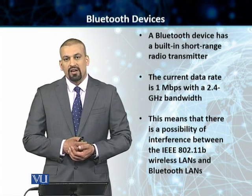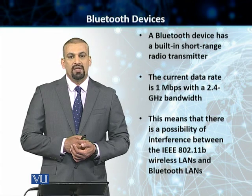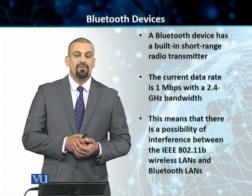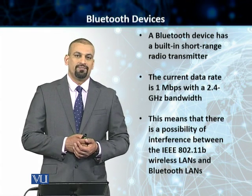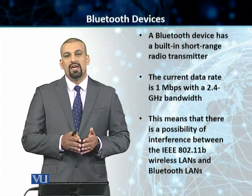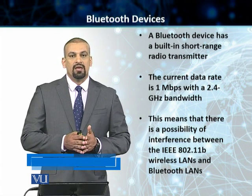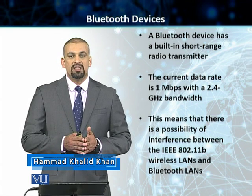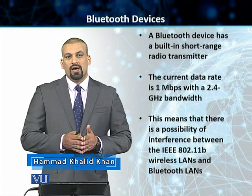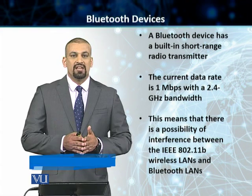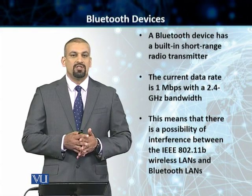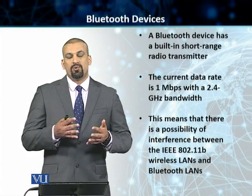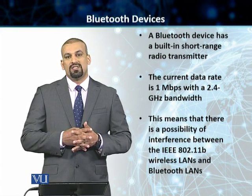The current data rate supported in the Bluetooth PicoNet or a ScatterNet is 1 Mbps at a frequency of 2.4 GHz. Remember, we went through this particular frequency and noted that 802.11b wireless LAN actually operates at a frequency of 2.4 GHz. Because Bluetooth works at the same frequency, there is a potential conflict between these two.